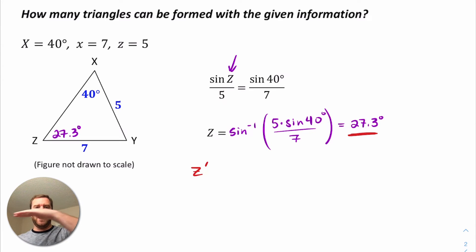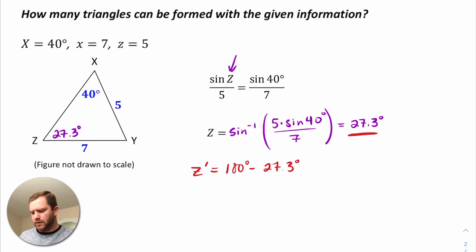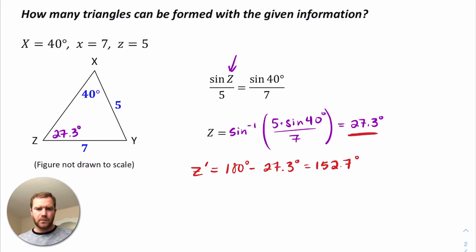If we were potentially to get an obtuse measure we wouldn't know it, because of the way the inverse sine is defined. The way to find the obtuse angle in the second quadrant that has the same sine value is to take its supplement. Since sine represents the Y value, the angle reflected about the Y-axis would just be 180 minus 27.3 degrees. So Z prime equals 152.7 degrees.